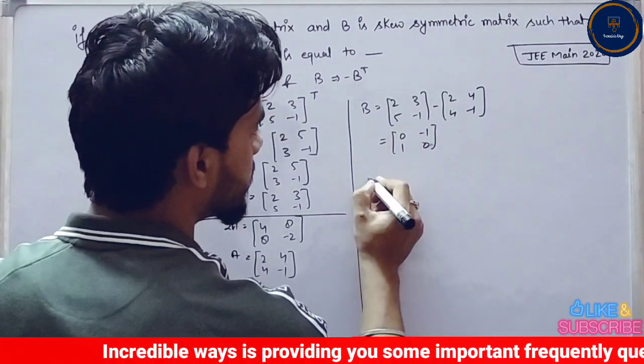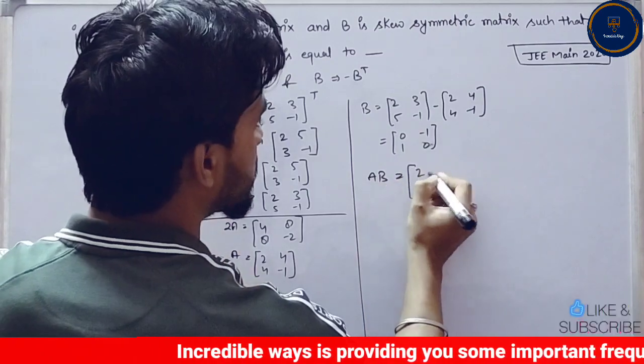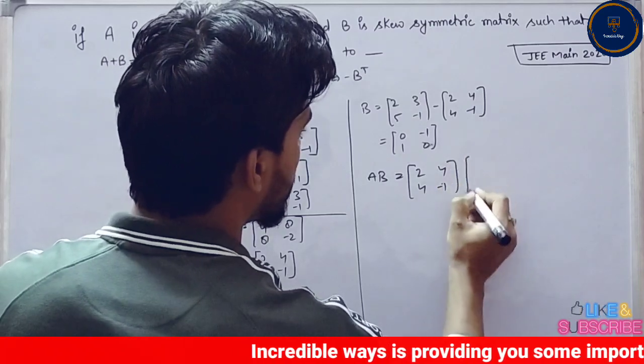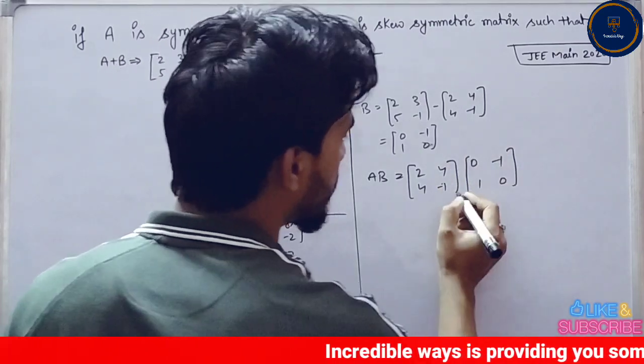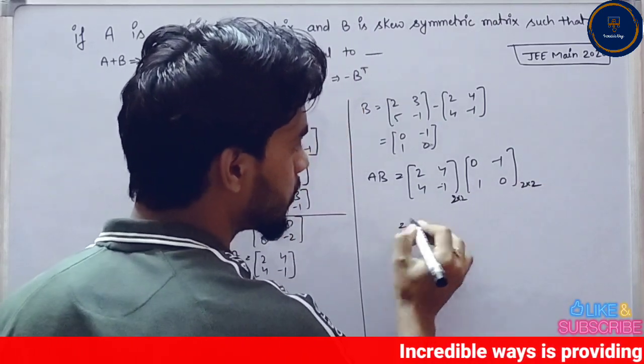Now let's find A times B multiplication. A times B, the value of A is [2, 4; 4, -1] and B is [0, -1; 1, 0]. This is a 2 by 2 matrix, this is a 2 by 2 matrix. Output will be 2 by 2.